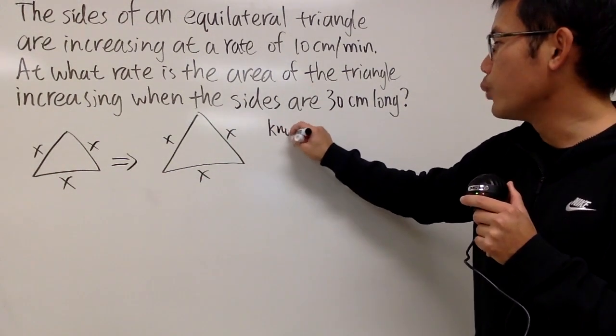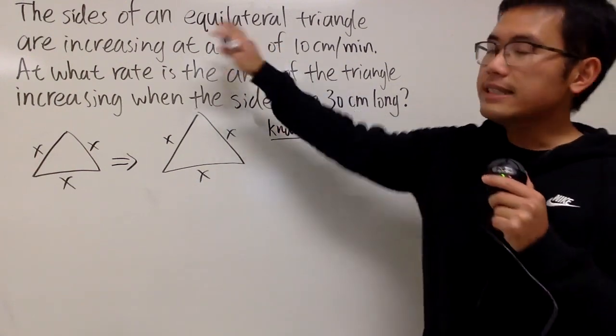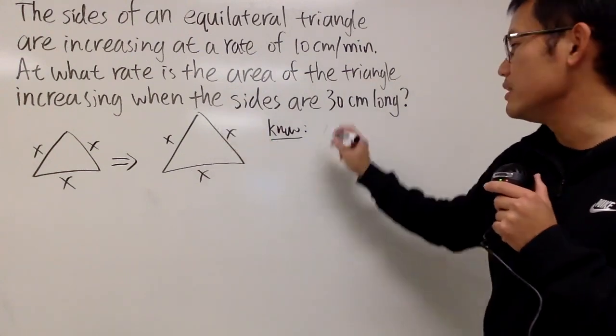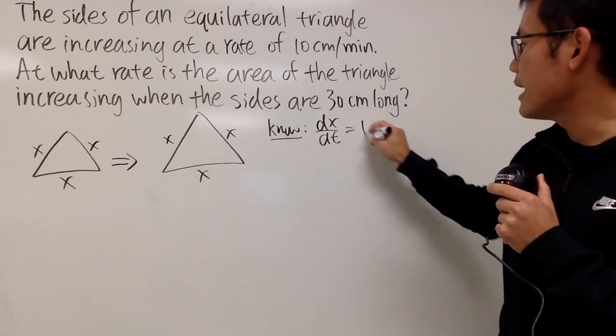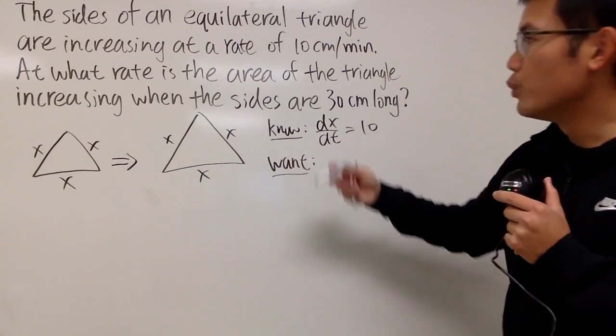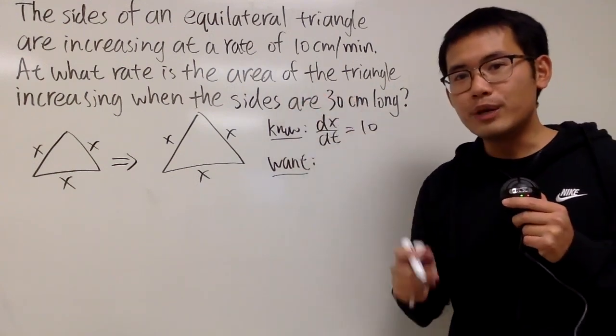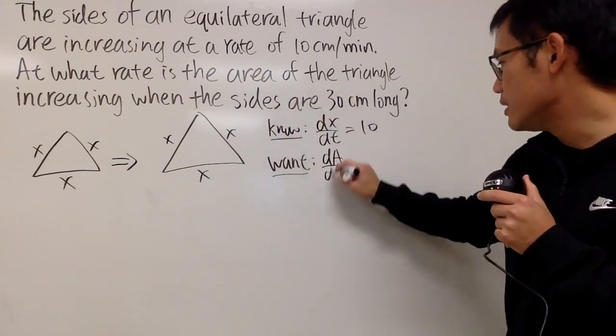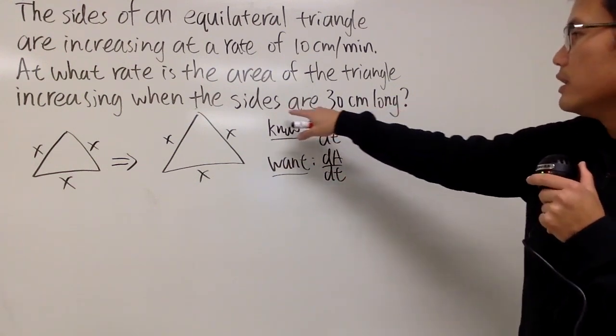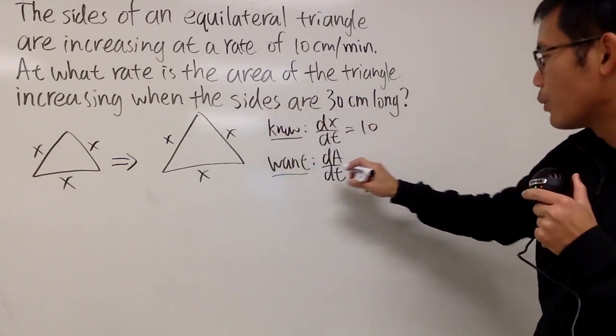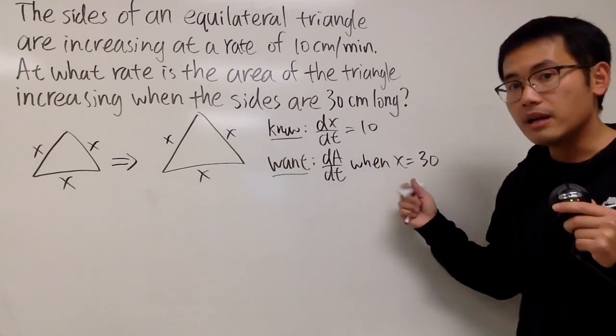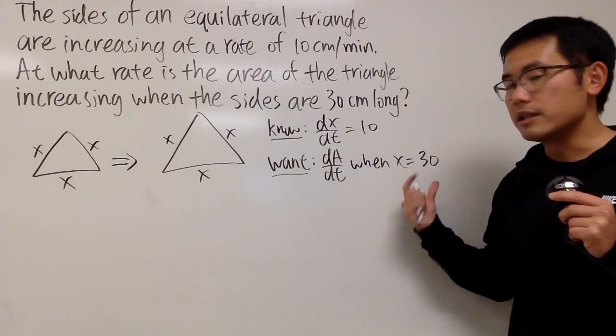And now, let's put down what we know. Well, it says the sides are changing at this rate, and according to our picture, that will be dx/dt equals 10, like this. That's very nice. And what do we want to know then? Well, we want to find out how fast is the area changing. So that's just dA/dt. And of course, A is the area of the triangle. And more particularly, it says when the sides are 30 cm long. So I will have to say when X equals 30. So this, again, at the instant. This part is really important as well.